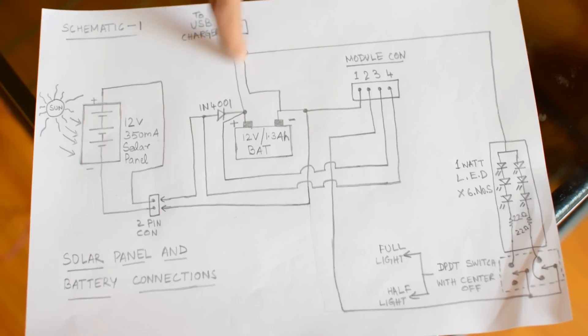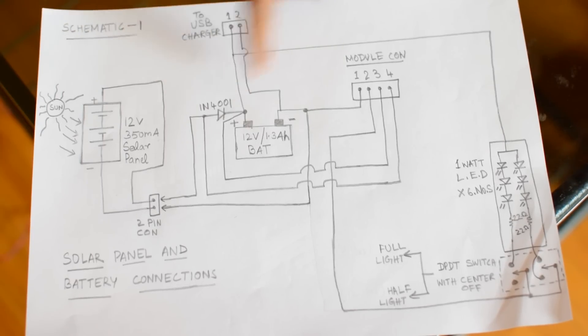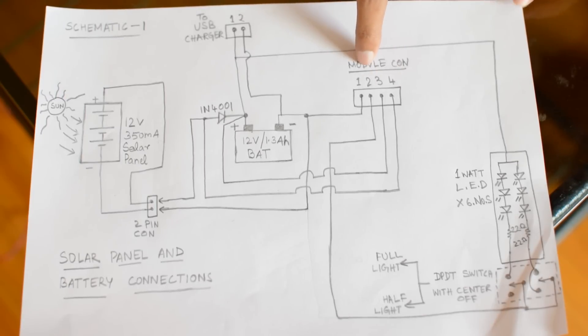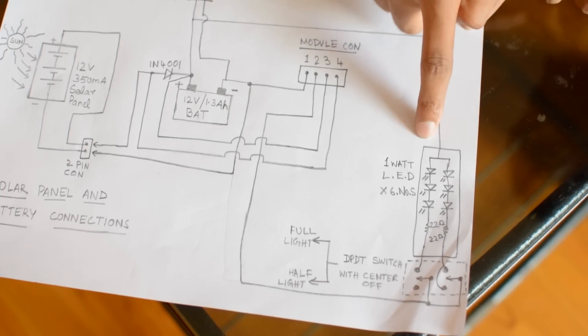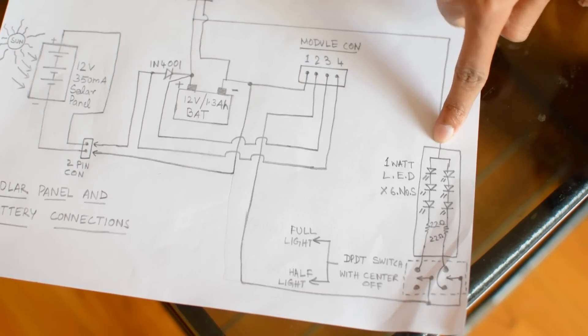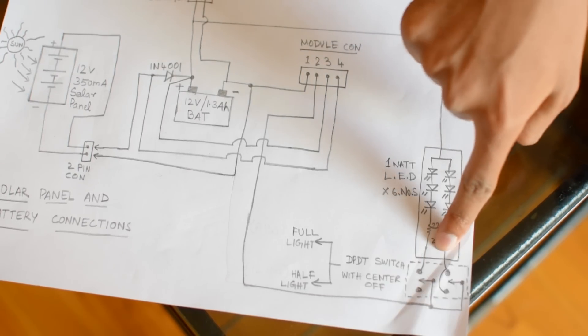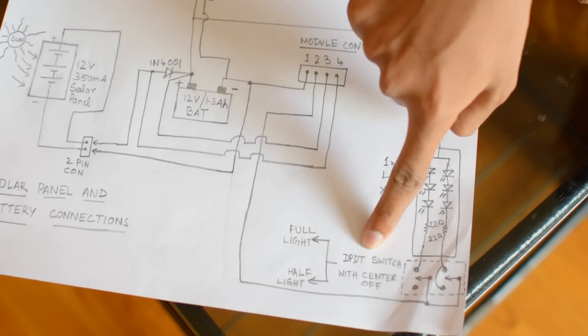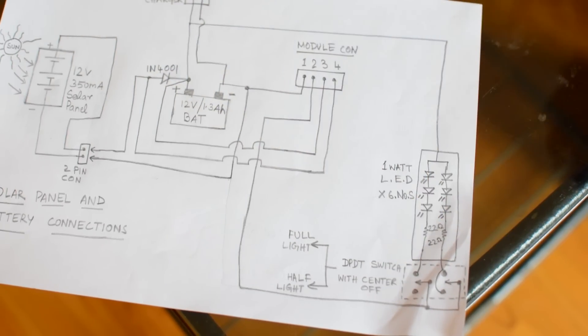This is the USB charging connector connected to the battery and this is the 4-pin module connector where you can connect all the different modules that you made. This is the light panel guys. It has 6 LEDs in it, each of 1 watt. These are connected with the help of a DPDT switch with center off position. The connection is shown over here. Have a look.